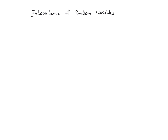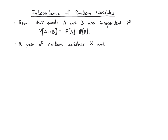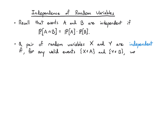Let's adapt the idea of independence to pairs of random variables. Remember when we defined independence before, we had events A and B and said they're independent if the probability of the intersection of A and B equals the product of their probabilities. For a pair of random variables, we take basically the same definition: X and Y are independent if for any events A and B, the probability that X belongs to A and Y belongs to B factors in the same way.